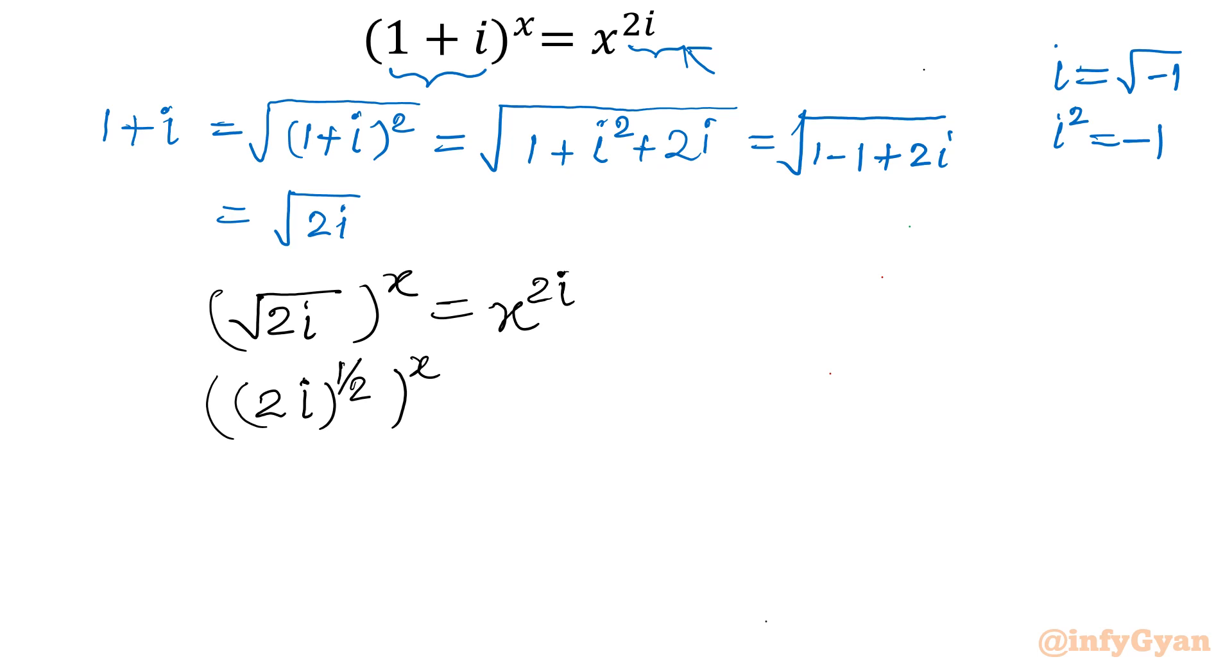Now one strong property of exponentials we will use: that is a power b whole power c can be written as a power bc. Let us take the product in the exponent. So I will write 2i power will be x by 2. We will multiply these two as per the given exponential property.